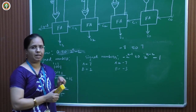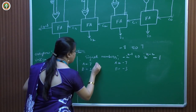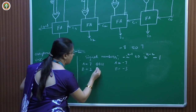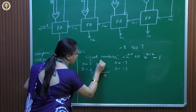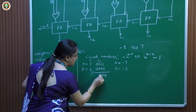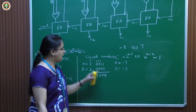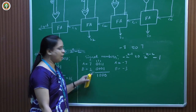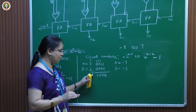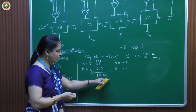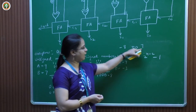Let us look at examples to understand overflow detection for signed numbers. First, add 7 and 1. We represent 7 as 0111 and 1 as 0001. Performing the addition: 1+1 gives sum 0 carry 1, cascading through, we get 1000. The decimal equivalent of 1000 is 8. The number 8 does not fall in the range −8 to 7, so there is an overflow.